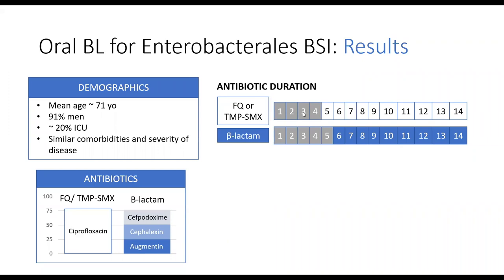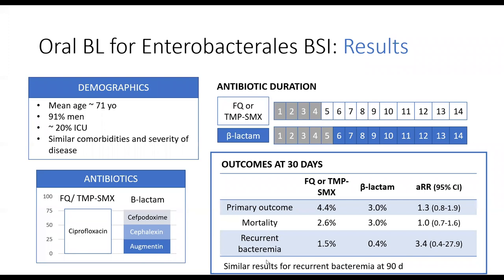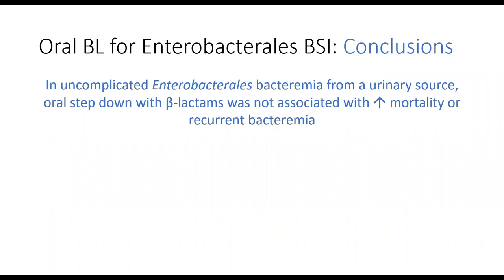Patients received on average four to five days of IV antibiotics before transitioning to oral, and both groups received about 14 days of antibiotics total. Looking at outcomes at 30 days, for the primary outcome—the composite of mortality and recurrent bacteremia—there was no significant difference between the two groups, nor any significant difference in the individual components. At 90 days, they found similar results for recurrent bacteremia. The authors concluded that in uncomplicated Enterobacteriales bacteremia from a urinary source, oral step-down therapy with beta-lactams was not associated with increased mortality or recurrent bacteremia.